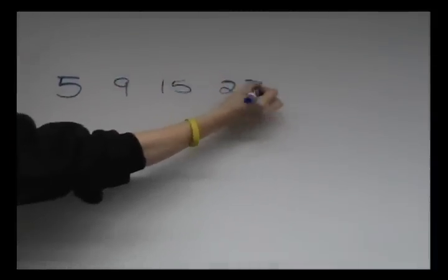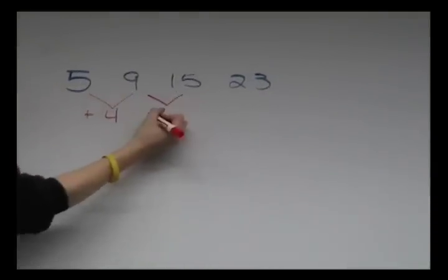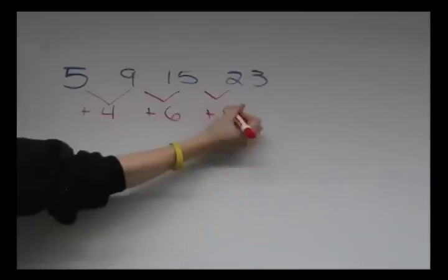When looking for common differences, you're not always going to find it on the first try. For instance, the difference between 5, 9, 15, and 23 is not a common difference.